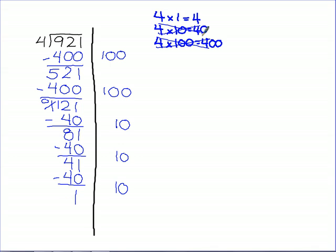I certainly can't take another set of 40 out. But can I take 4 out? I have one left — can I take 4 out? No, I can't take 4 out. So what does that tell us about this number? It's our remainder. So I know that my remainder is 1.